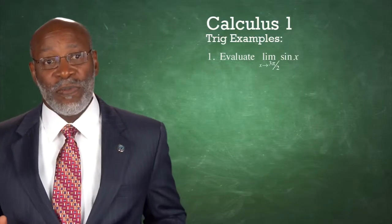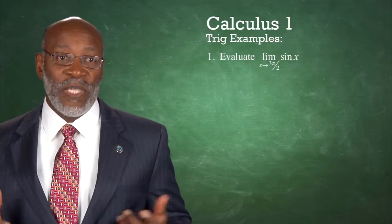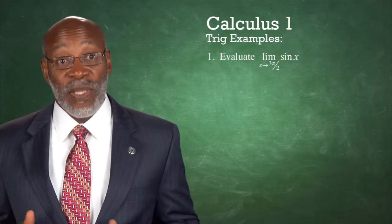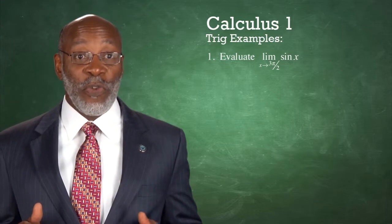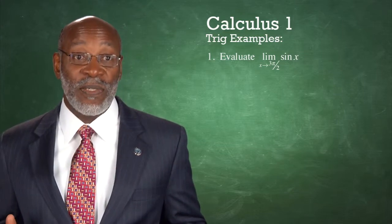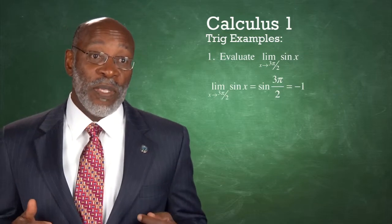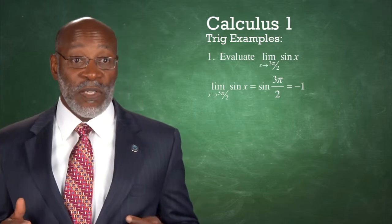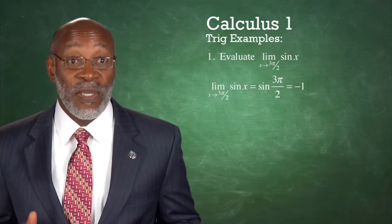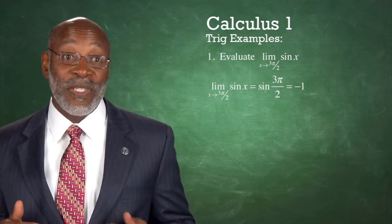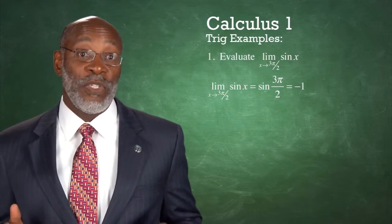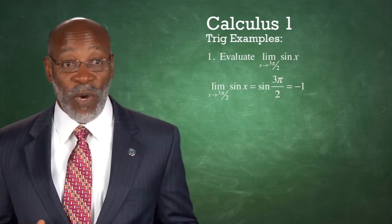Trig Examples. Example 1: Evaluate the limit as x tends to 3π/2 of sine x. The limit as x tends to 3π/2 of sine x is equal to the sine of 3π/2, which equals negative 1.